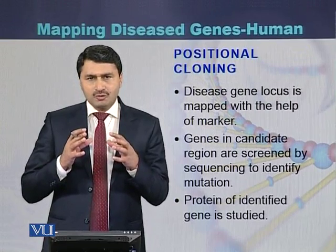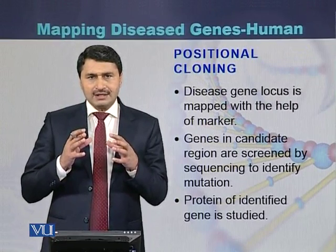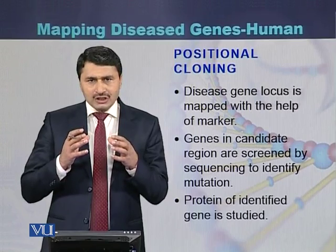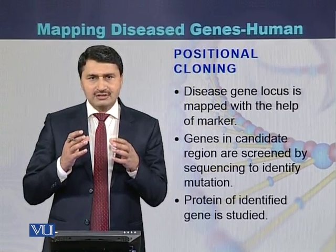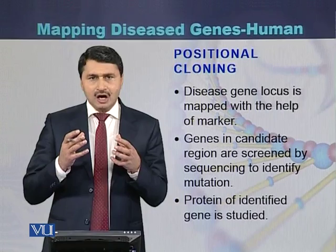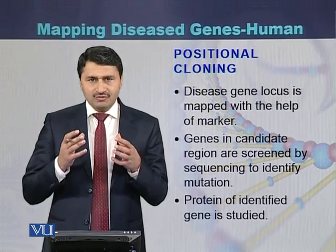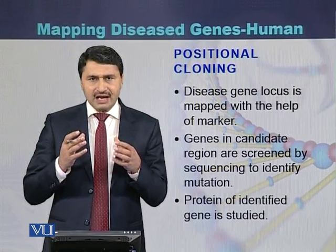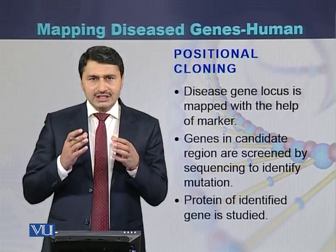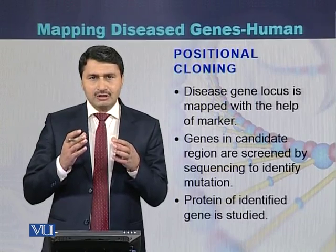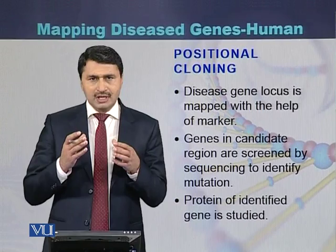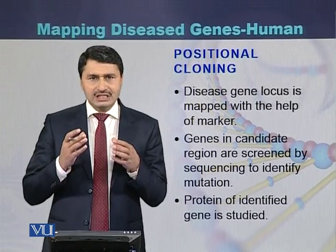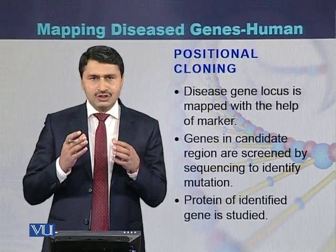In the case of position dependent, first a particular location on the genome is identified with the help of markers — either STR markers or single nucleotide polymorphisms. Once a particular location is identified, all the genes present in that location are sequenced. The gene that has a mutation or is responsible for causing a particular phenotype is then identified. This method is called positional cloning.